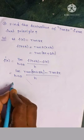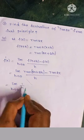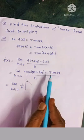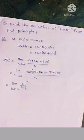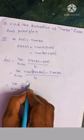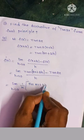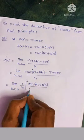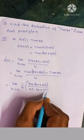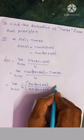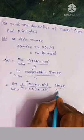So, limit h tends to 0, 1 by h — 1 by h is a constant. So applying the formula: tan 2x plus 2h means sin(2x plus 2h) by cos(2x plus 2h), minus tan 2x means sin 2x by cos 2x.